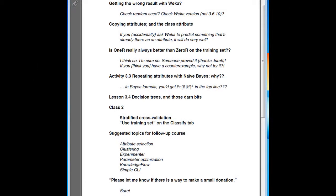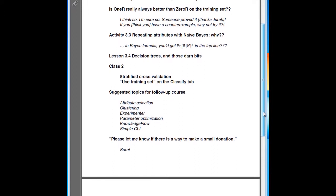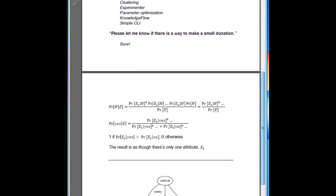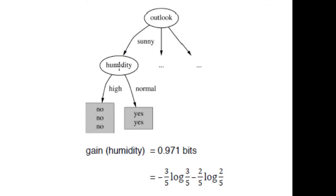On decision trees: someone on the mailing list noted that in the lecture there was a condition that resulted in branches with all yes or all no results, completely determining things. Why was the information gain only 0.971 and not the full one bit? Humidity determines — these are all no's for high humidity and all yes's for normal humidity. When you calculate the information gain using the formula, you get 0.971 bits. You might expect one, and you would get one if you had three no's and three yes's, or two no's and two yes's. But because there's a slight imbalance between the number of no's and yes's, you don't actually get one bit under these circumstances.